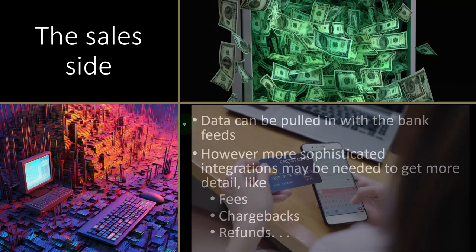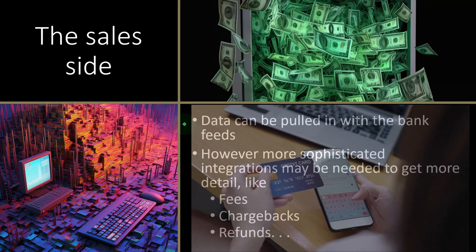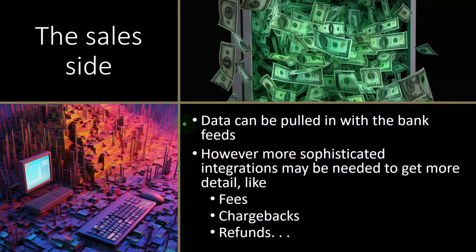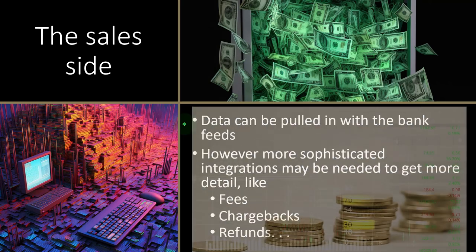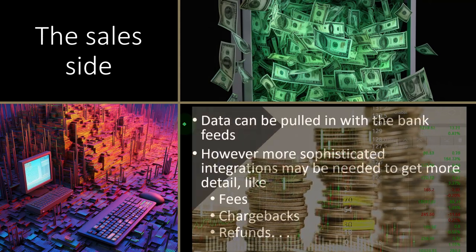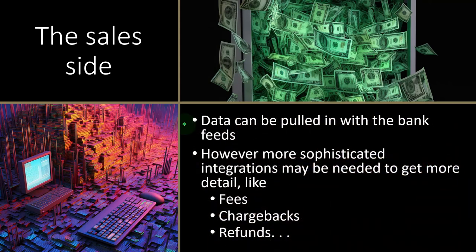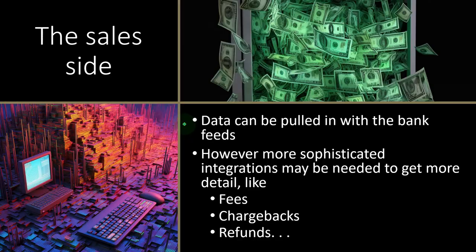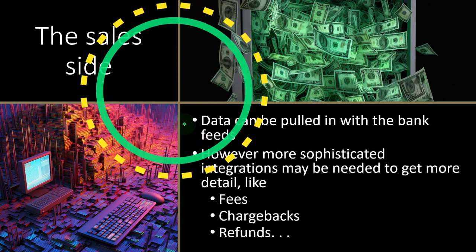For example, if you had a $1,000 sale and by the time it hits your bank account it's only $800, you'd be recording $800 as revenue. What should have happened is recording $1,000 as revenue and then the fees, chargebacks, and everything else as an expense or a contra-revenue account. That's the issue with the simple bank feed method.